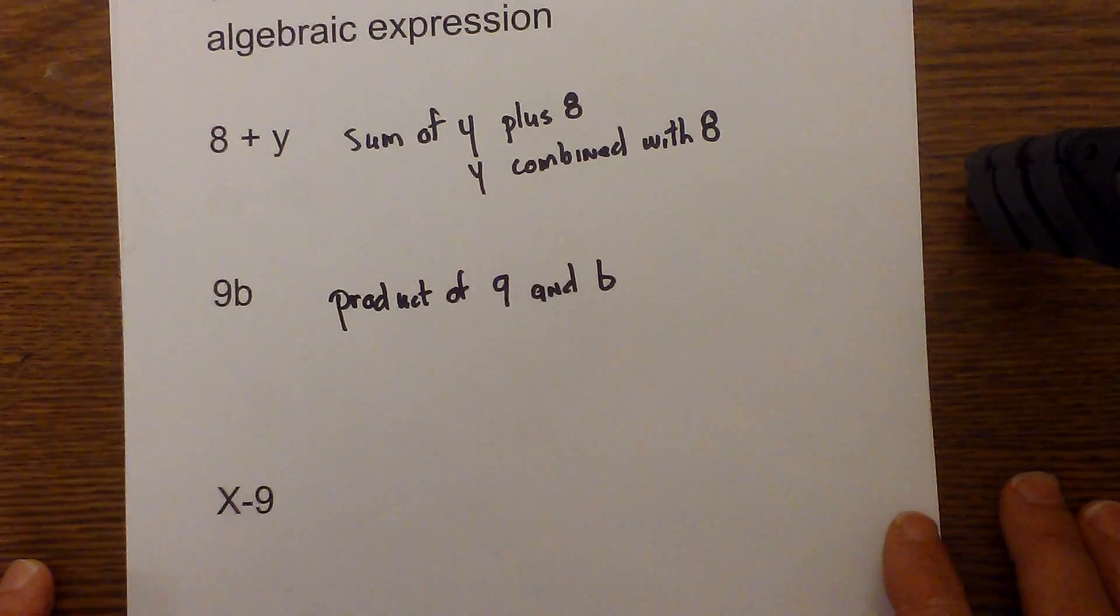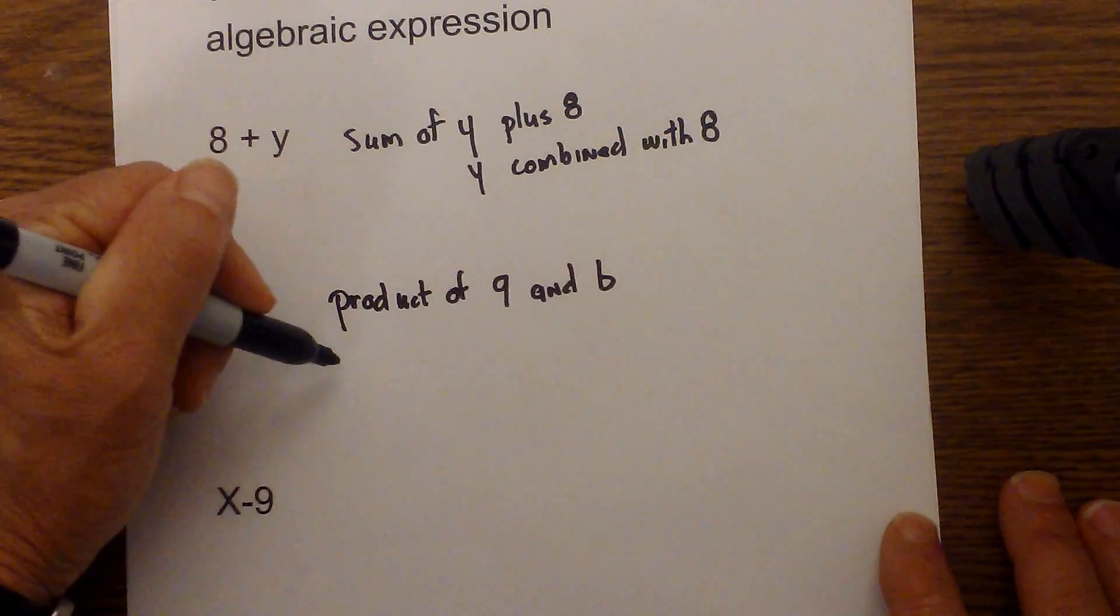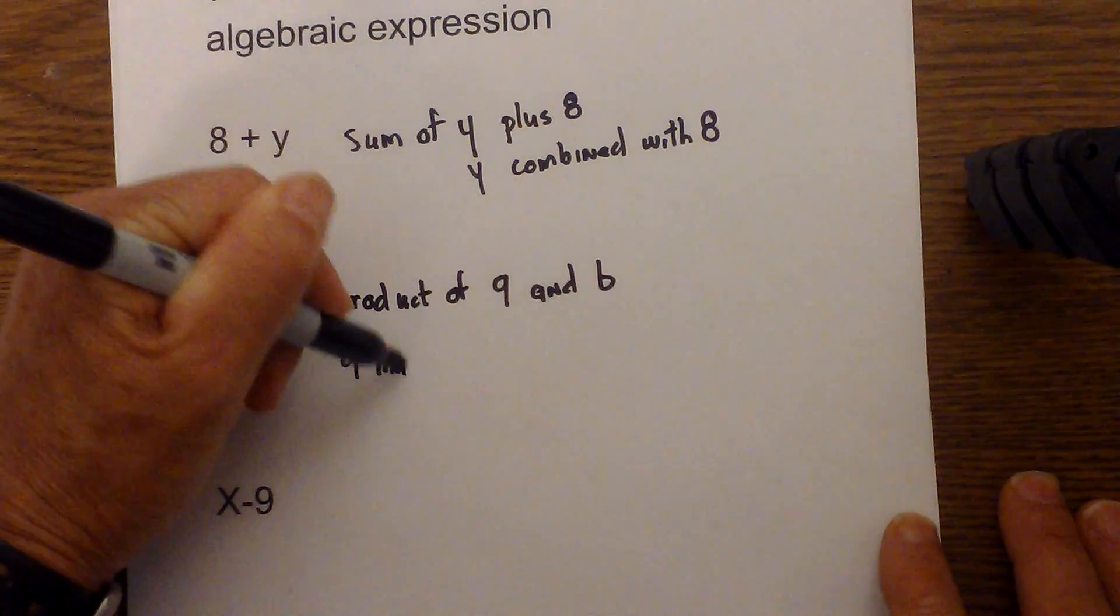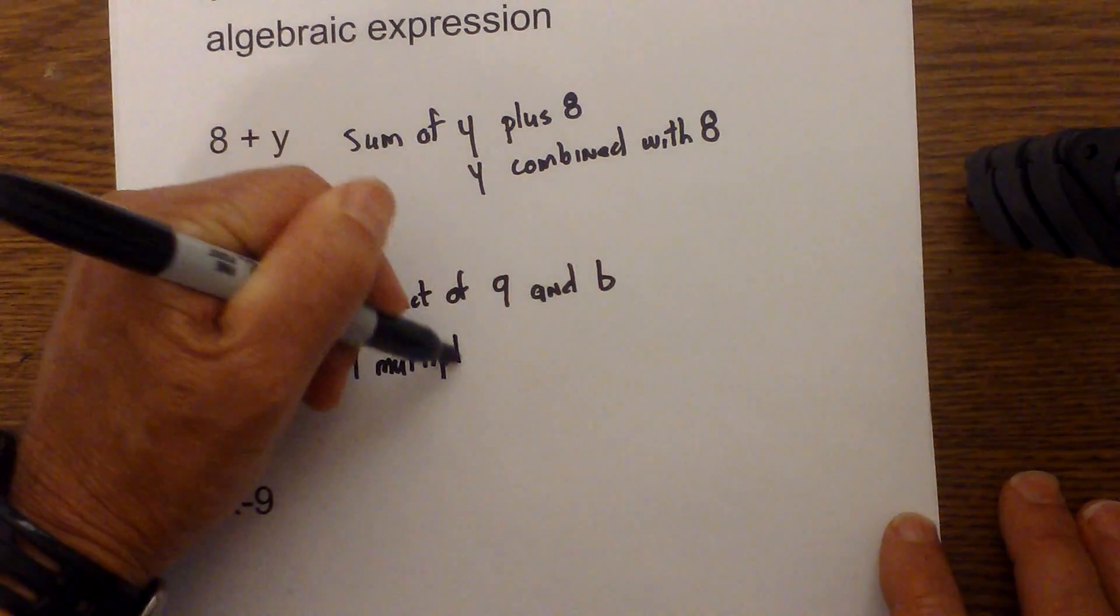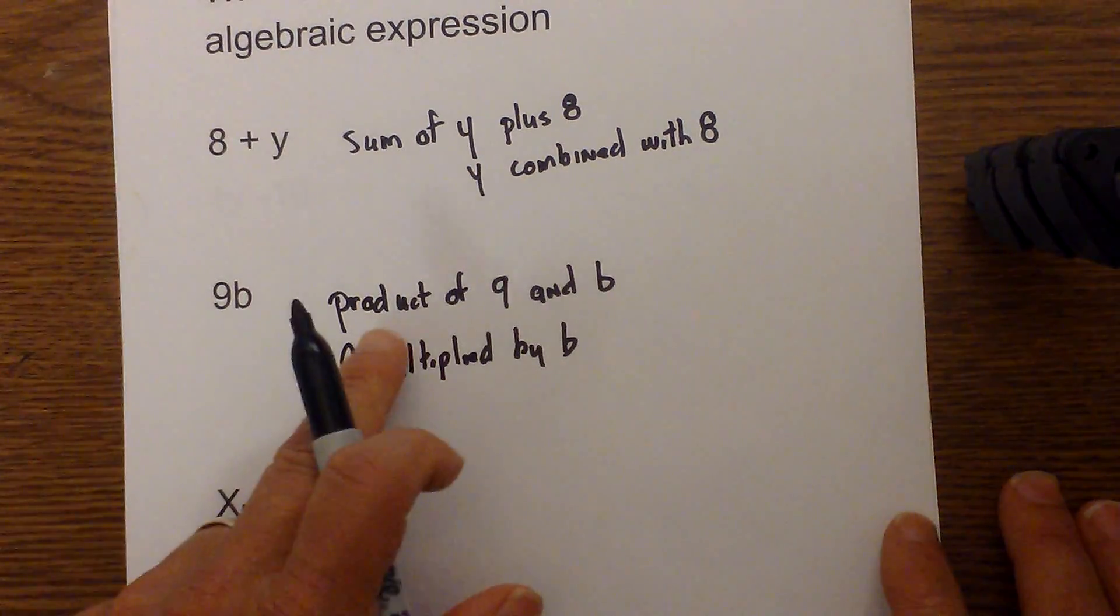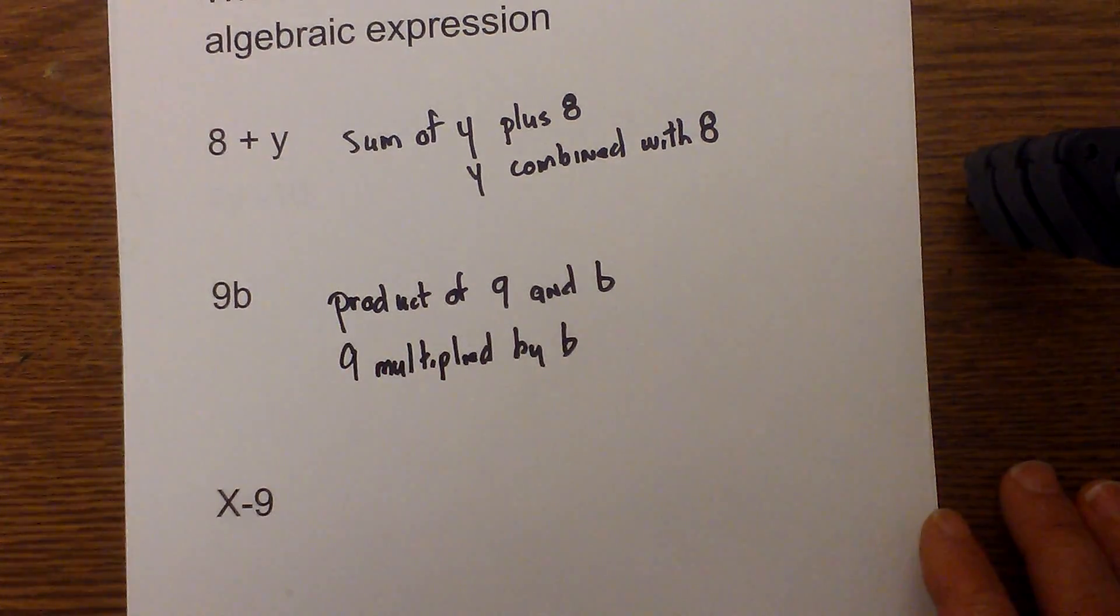If you don't like the word 'product', you could use 9 multiplied by b. But I actually like 'product of 9 and b' the best.